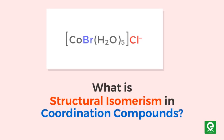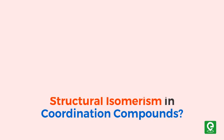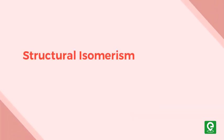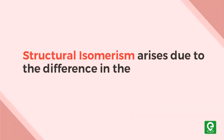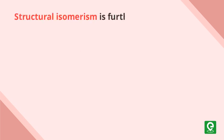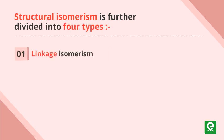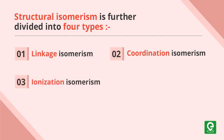What is structural isomerism in coordination compounds? Structural isomerism arises due to the difference in the structures of coordination compounds. Structural isomerism is further divided into four types: linkage isomerism, coordination isomerism, ionization isomerism, and hydration isomerism.